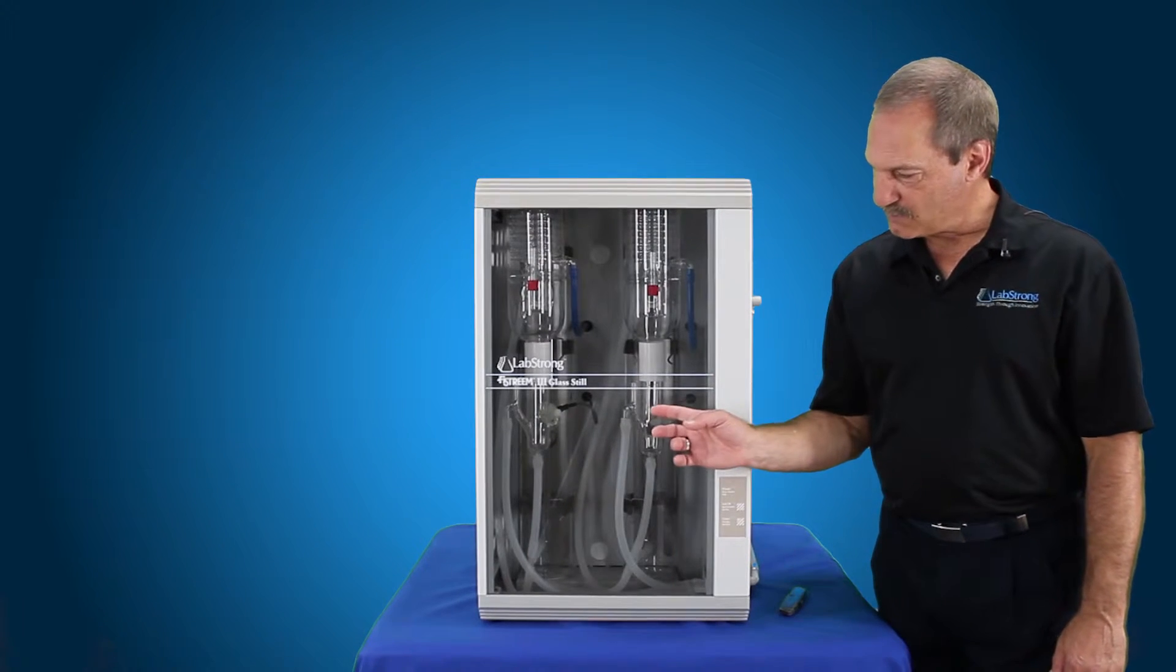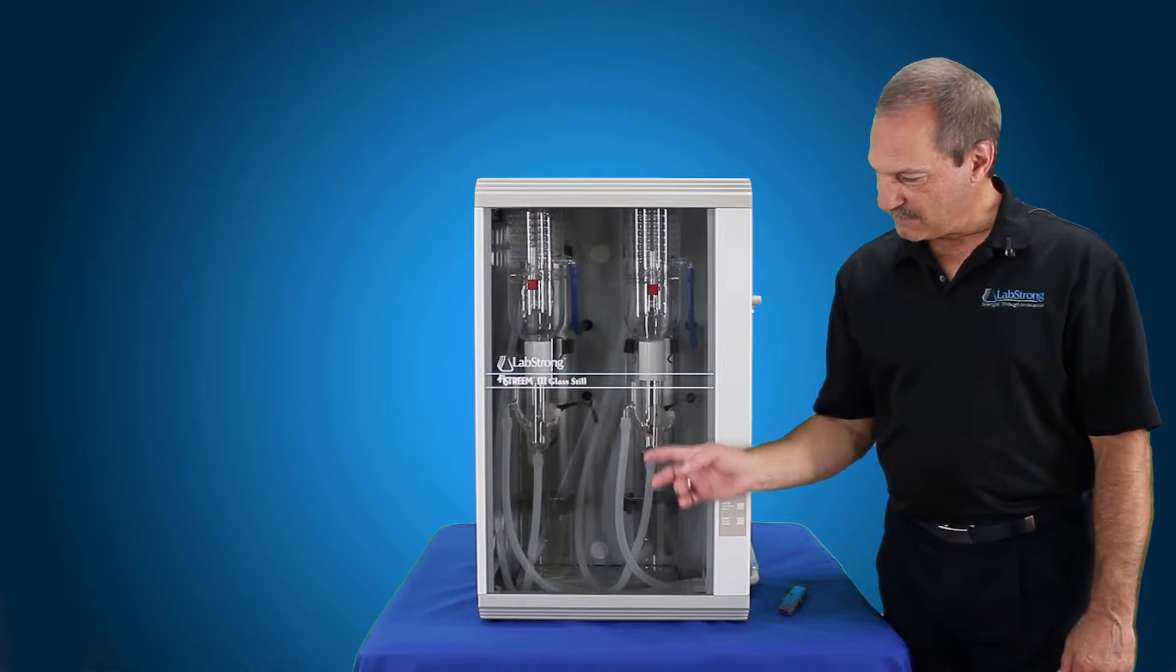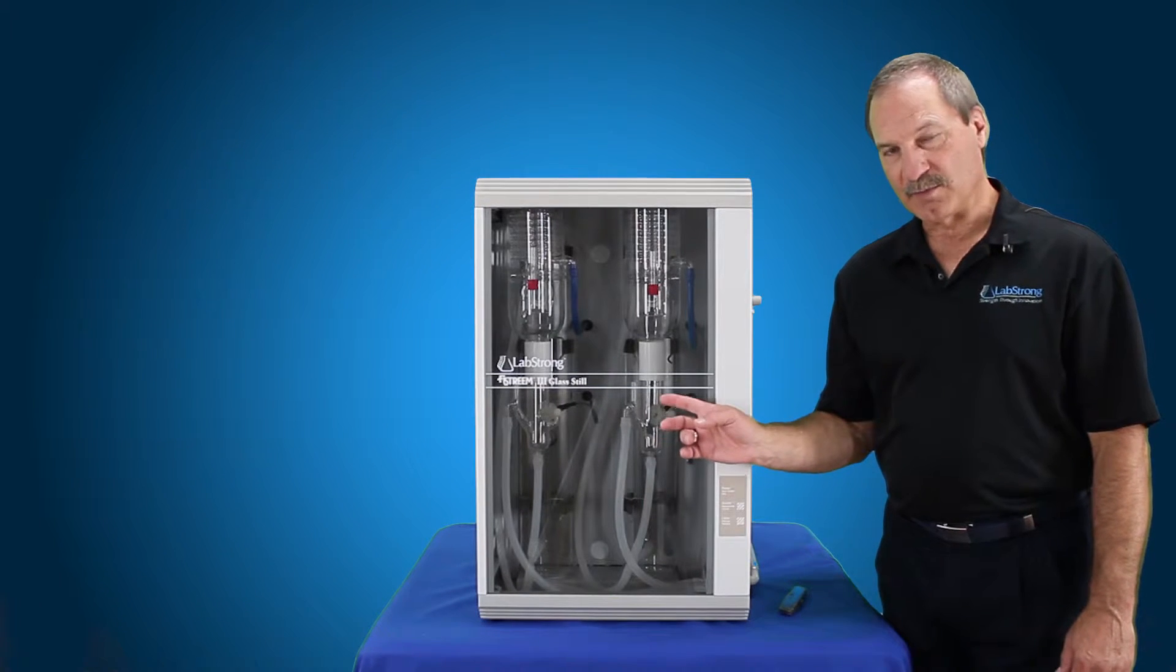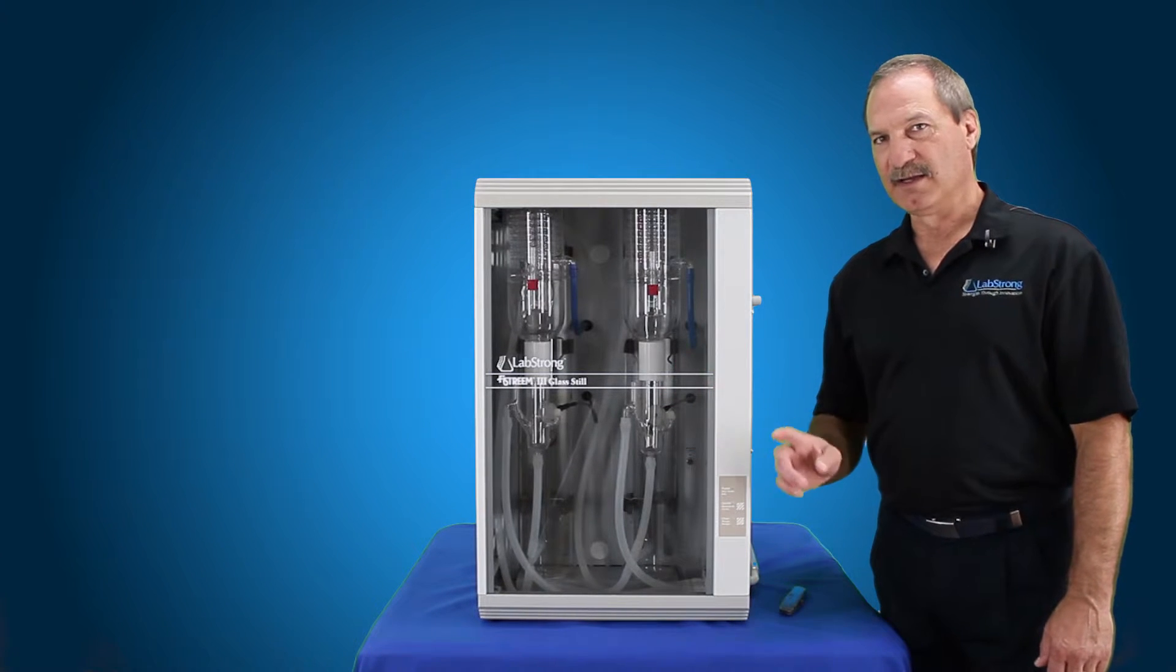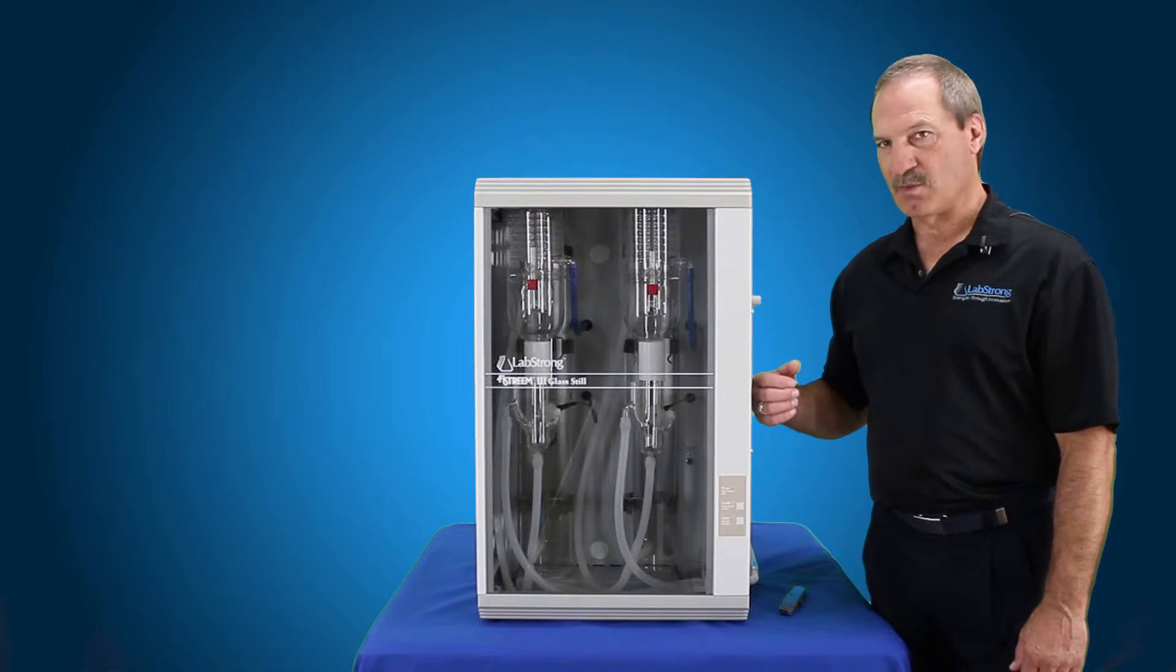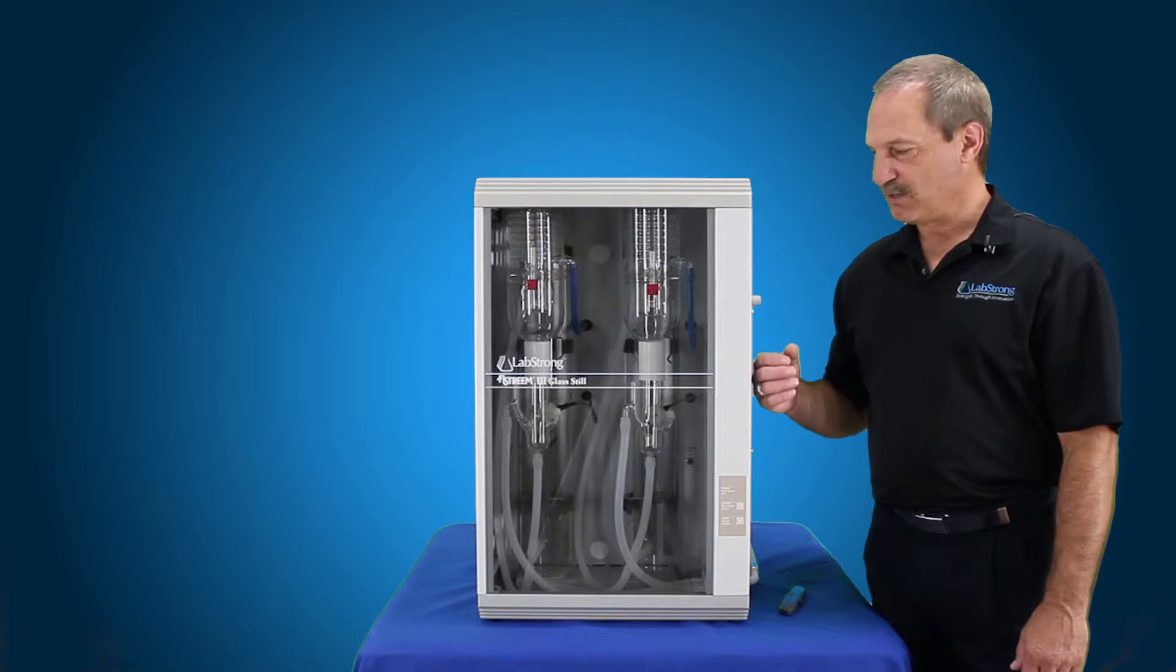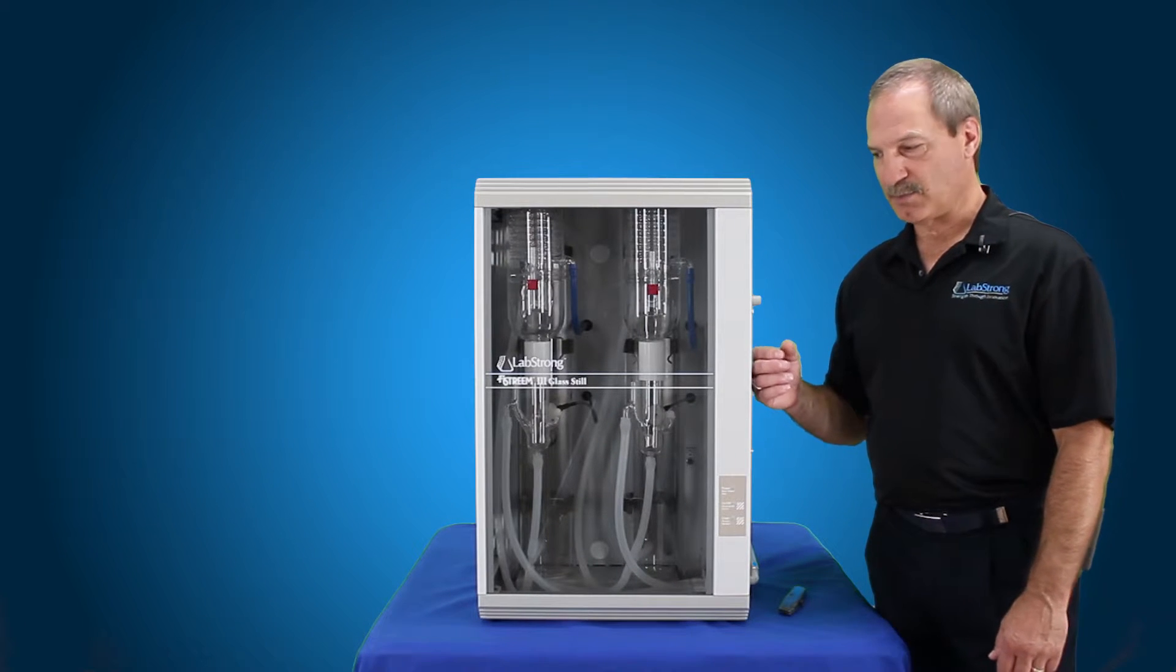We're going to show you how to replace the tubing that's already been in this unit for quite a while, and when that happens it actually adheres itself to the glass. First thing you want to do is always make sure that your water connection is disconnected and your electrical is disconnected.